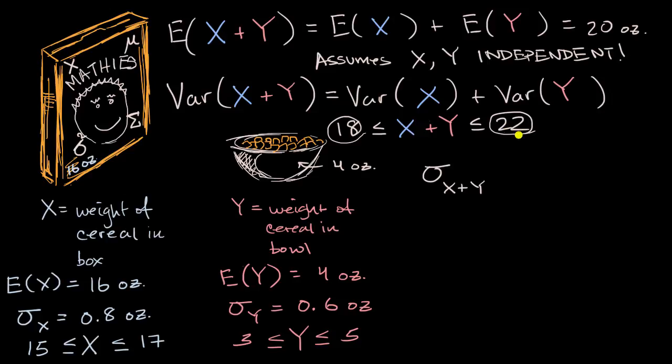Or another way you could think about it is, these upper and lower ends of the range are further from the mean than these upper and lower ends of the range were from their respective means. So hopefully this gives you an intuition for why this makes sense.